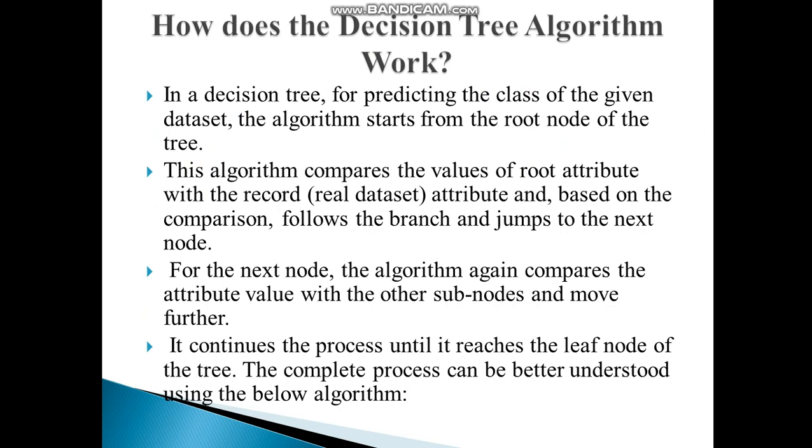In a Decision Tree, for predicting the class of a given dataset, the algorithm starts from the root node of the tree. This algorithm compares the value of root attribute with the record attribute, and based on the comparison, follows the branch and jumps to the next node. For the next node, the algorithm again compares the attribute value with the other sub-nodes and moves further. It continues the process until it reaches the Leaf Node of the tree.